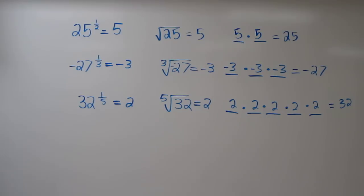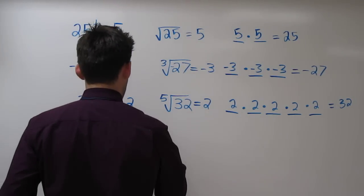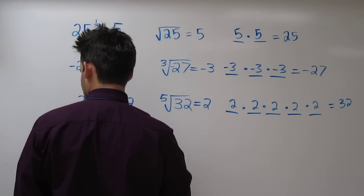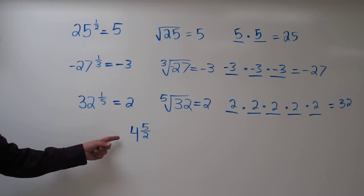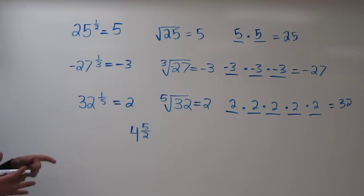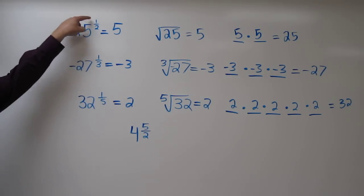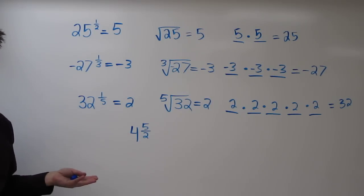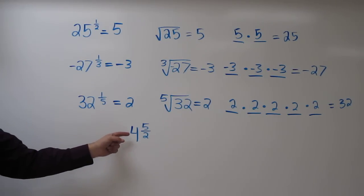Now let's try one a little more complicated. What if we're dealing with 4 to the 5 halves? This is a little more challenging because the numerator of our fraction in our exponent is not 1 like it was in each of those situations. So here's the trick: we can use the properties of exponents to change the numerator in our exponent to 1.